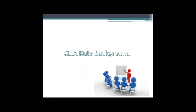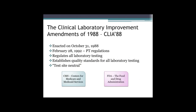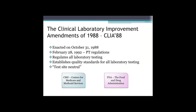The CLIA rule governs laboratory operations and compliance, so it seems appropriate to start with the history behind this regulation. CLIA, which was enacted on October 31st, 1988, is a federal mandate that defines laboratory testing standards. CLIA stands for Clinical Laboratory Improvement Amendments, and the rule published in 1988 supersedes the requirements originally outlined in the CLIA Act of 1967. On February 28th, 1992, regulations surrounding proficiency testing, or PT, were added to the rule.